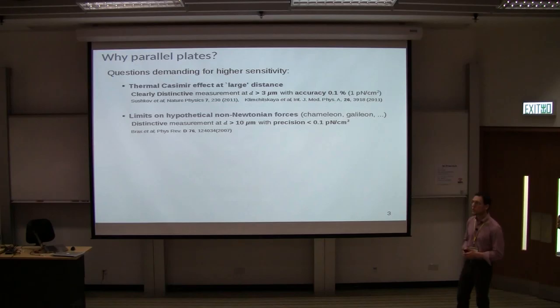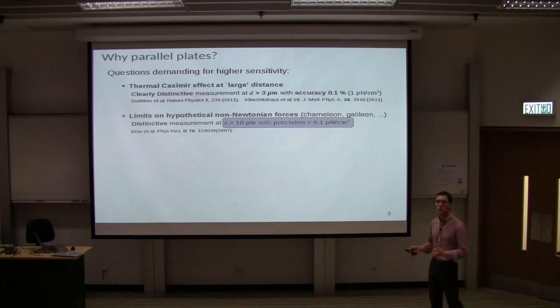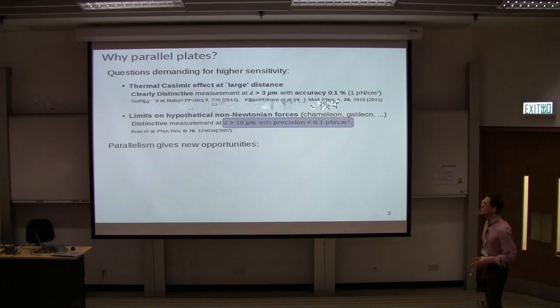Well, the second point, this is actually a bit more important for our experiment, is to set new limits on non-Newtonian forces, specifically a model which is called Chameleon. We'll come back to that. And if we look at what we actually need in order to get reasonable data which does something for theorists, is that we need to measure distances larger than 10 micrometer with a precision of 0.1 micrometer or better. Well, if we can achieve that, then it's clear that we can also make a Casimir measurement at large distances.